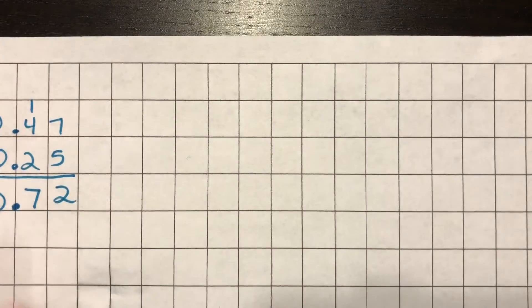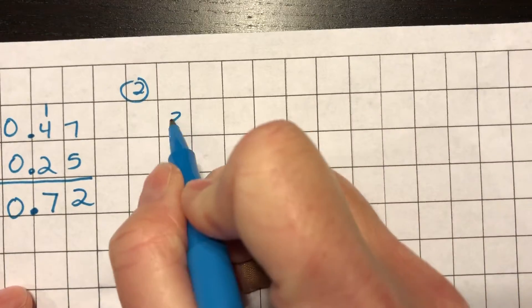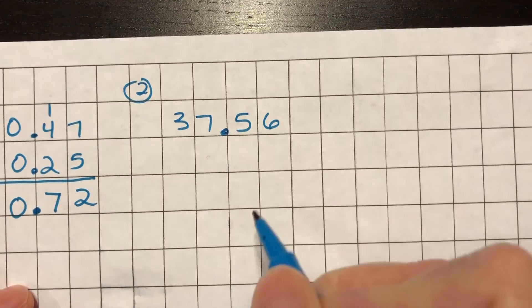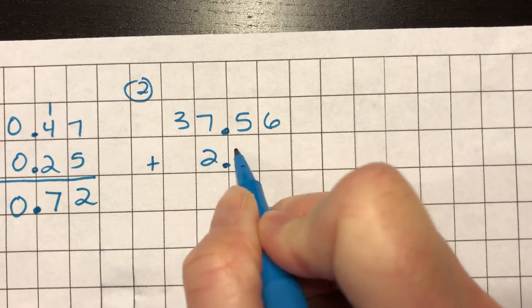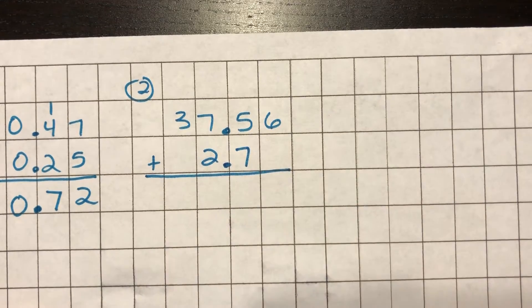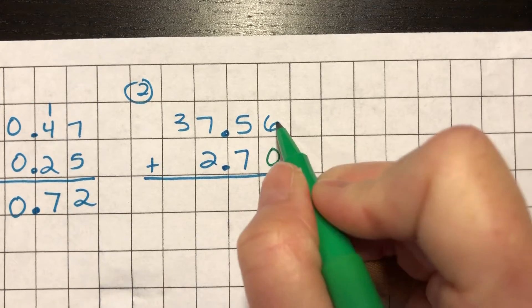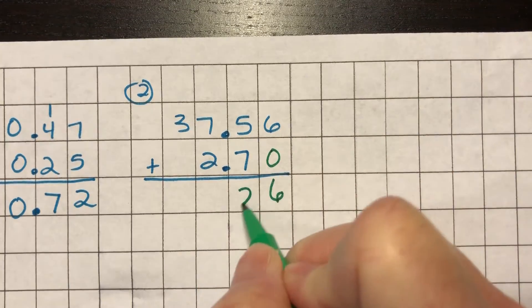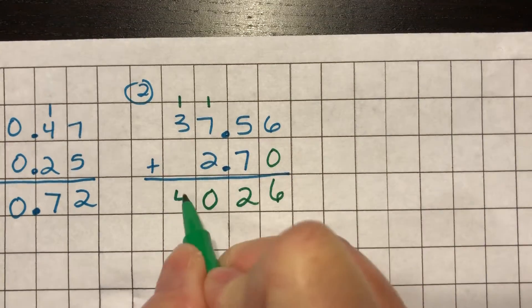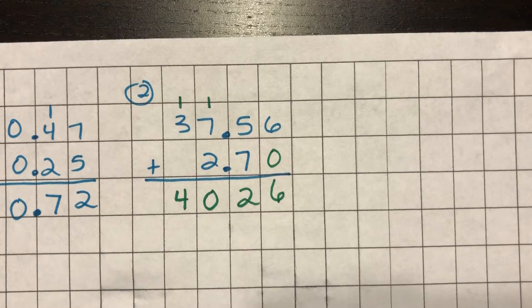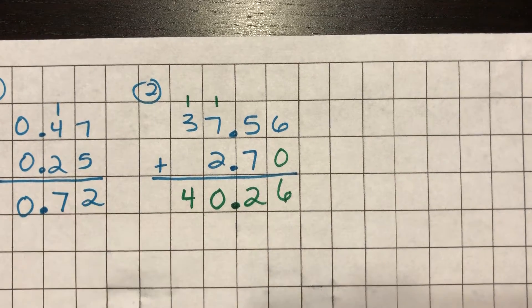Welcome back for number two. Number two was 37.56, so 37 and 56 hundredths plus 2.7. So the 2.7 should go right there. There should be nothing underneath your six and remember that if there's nothing underneath that six that means there's a zero. Six plus zero is six. Five plus seven is 12. I'm gonna carry my one. Seven, eight, nine, ten. Carry my one. Three plus one is four. The answer is not 4,026. This decimal point needs to stay. That's the third button on the shirt to separate all my place values.